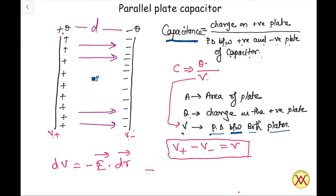Our first task is to calculate the electric field between the two plates. Because both plates are parallel to each other and the distance between them is very small d, we can say that the electric field lines between them will be parallel straight lines. We will neglect the fringing effect at the corners of the capacitor plates. Let us calculate the electric field at point P.